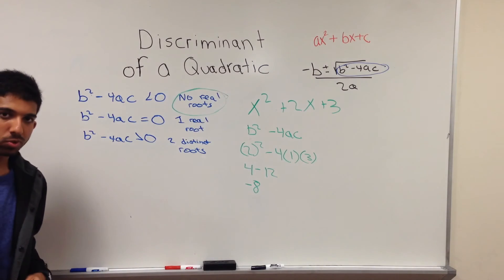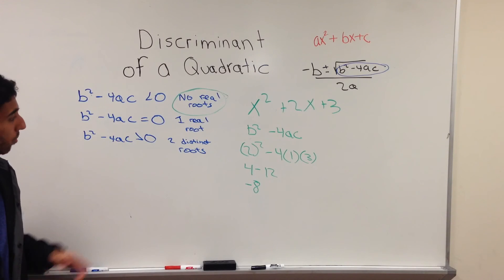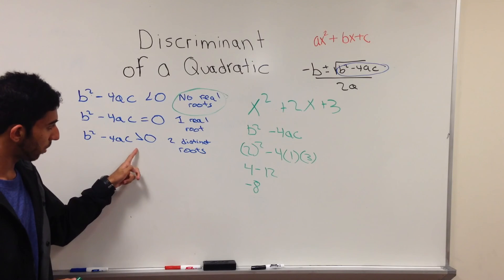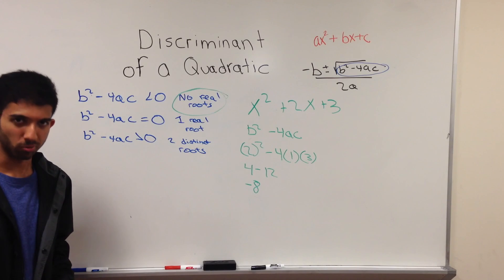Similarly, you can do more problems. If the discriminant equals zero, you will have one real root, and if it is greater than zero, you will have two distinct roots. Thank you, and I hope this helps.